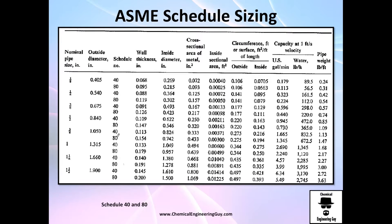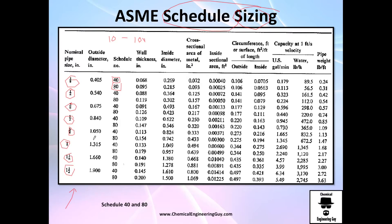To find the actual dimensions, we need ASME tables that show schedule sizing. This table shows only schedule 40 and 80, but you can find others with schedule 10, schedule 100, and more. The table lists sizes from one-eighth inch up to one-and-a-half inch, showing the outside diameter — which, as you can see, has nothing to do with the nominal size. For example, a one-inch pipe is actually 1.3 inches outside.